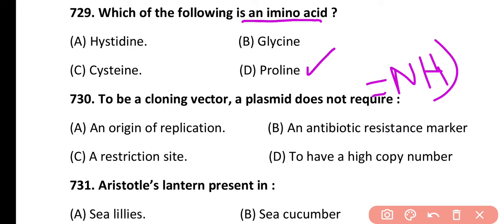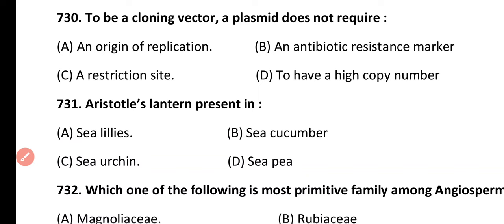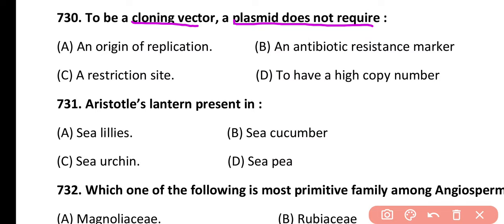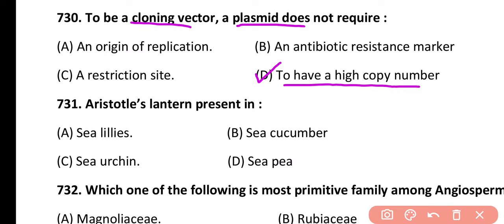Question 730. To be a cloning vector, a plasmid does not require: an origin of replication, antibiotic resistance marker, a restriction site, or to have a high copy number. Correct answer is option D. A plasmid does not require a high copy number, but it does require an origin of replication, an antibiotic resistance marker, and a restriction site.